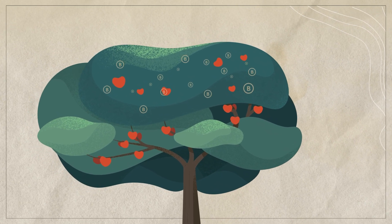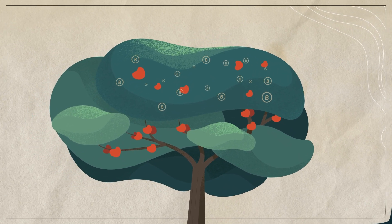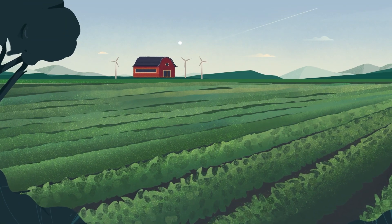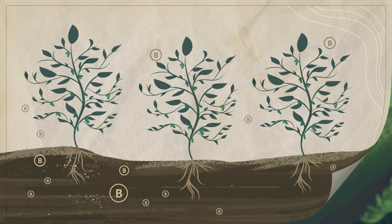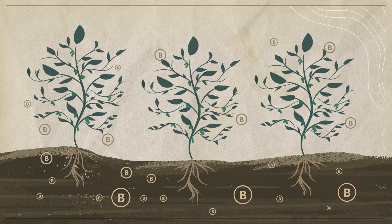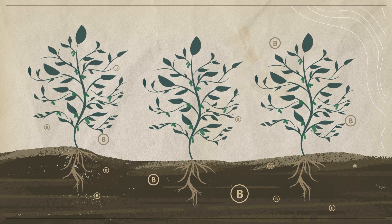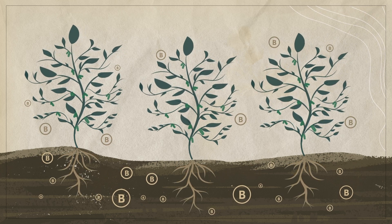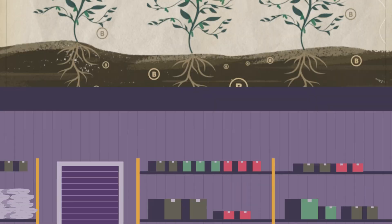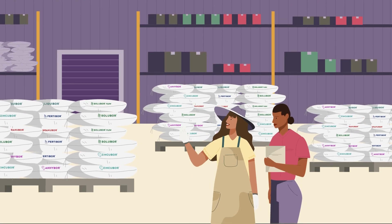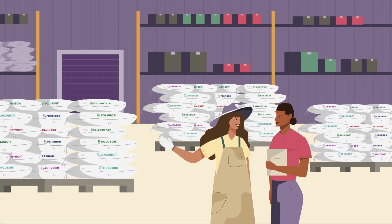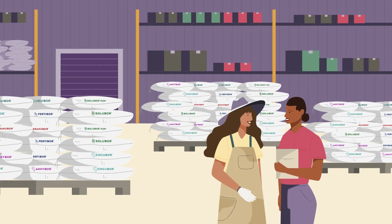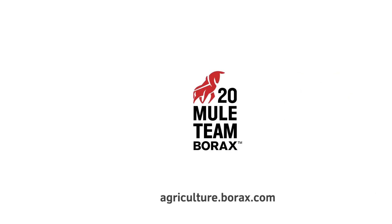In apple trees, boron can be applied via soil or foliar application. For most plants, the only way to get enough boron is to take it from the soil, or when the soil is boron deficient, through fertilizer applications, because boron is mobile via xylem. U.S. Borax fertilizer products can help correct boron deficient soils, and thus, boron deficiency in crops.